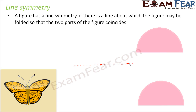Now let's look at the butterfly. Does the butterfly have line symmetry? Yes, of course. When you look at the butterfly along this line and think of folding the paper along this line, the two identical halves would coincide with each other. So it is line symmetry, and this is the line of symmetry in this case.